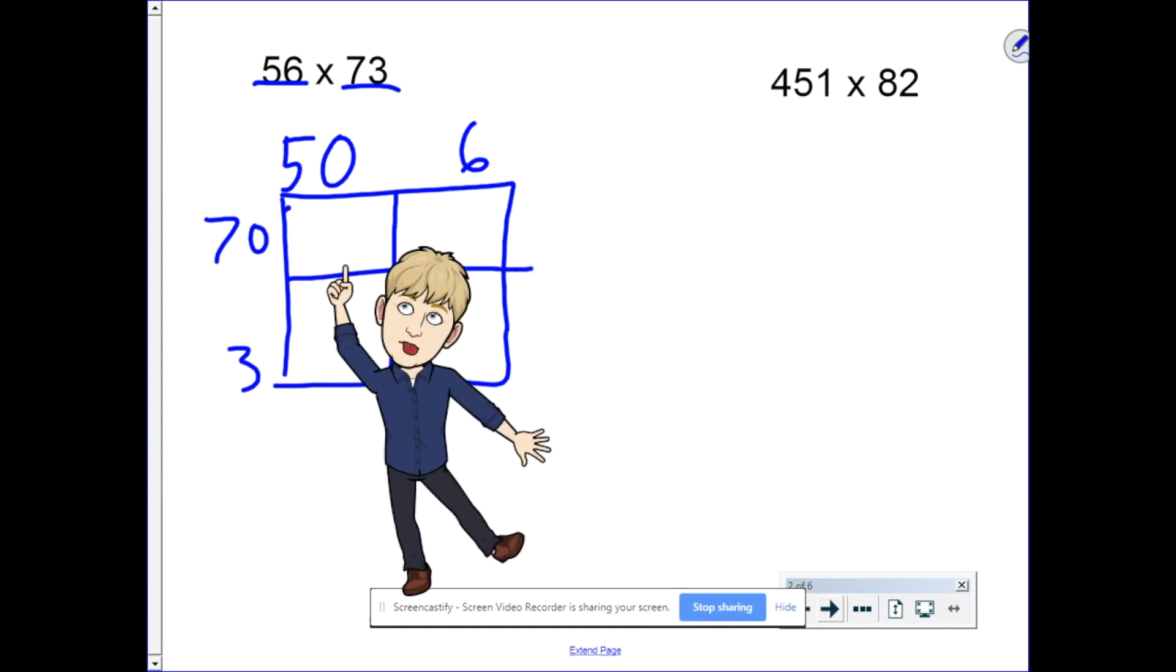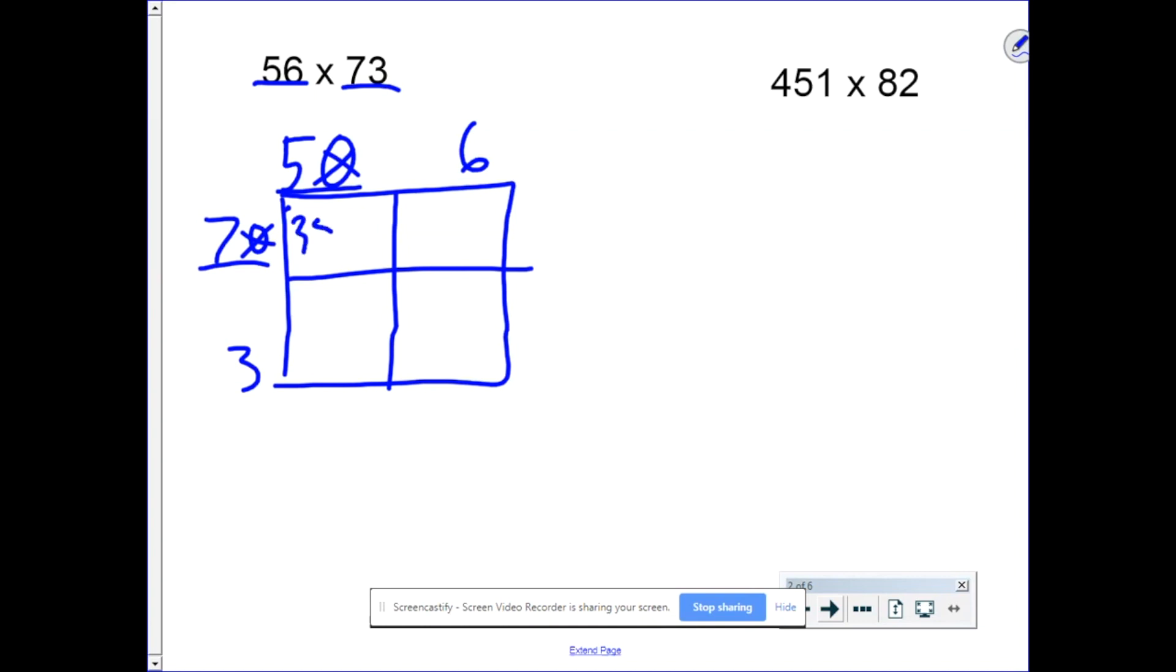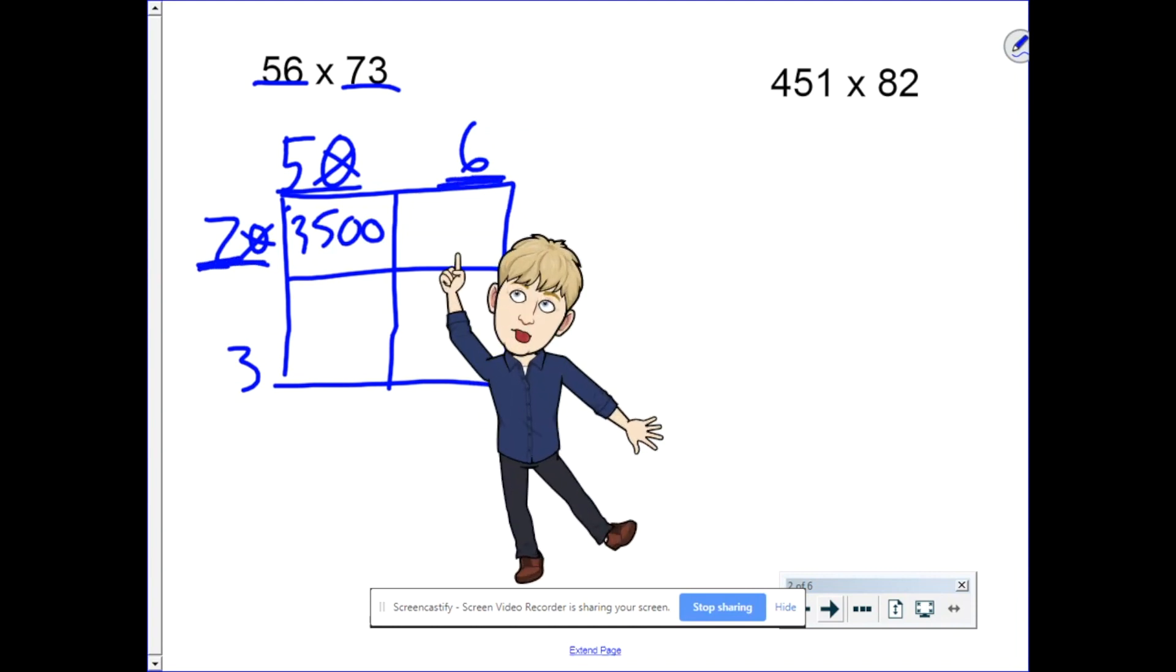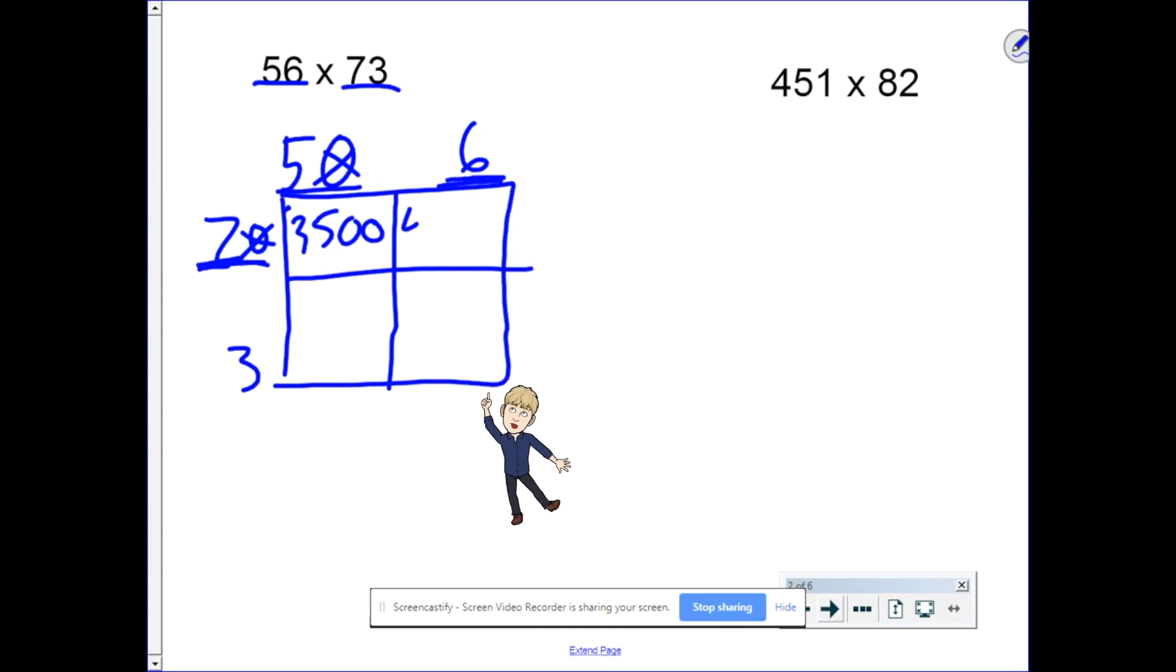In this first box, it's 50 times 70. What's 5 times 7? It's 35. Tack on the two zeros, we get 3,500. Going across, it's 70 times 6. 7 times 6 is 42. Tack on the zero, that's 420.